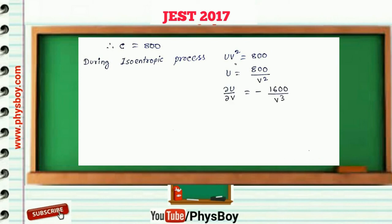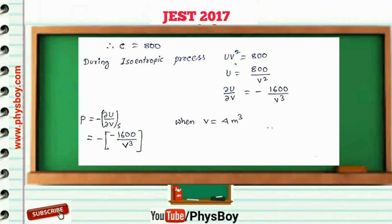Differentiating U = 800/V² with respect to V gives ∂U/∂V = −1600/V³. Since pressure P = −(∂U/∂V) at constant S, we get P = 1600/V³. So pressure is a function of volume.